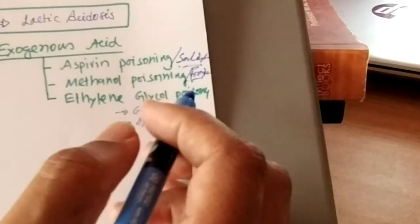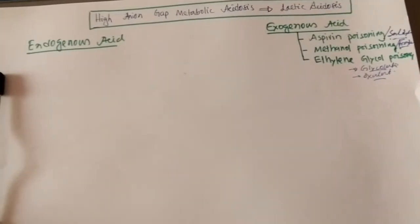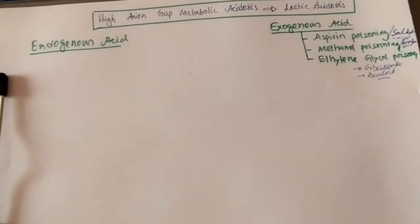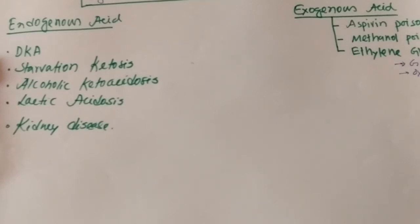Now the endogenous acid load causes: diabetic ketoacidosis, starvation ketosis or ketoacidosis, alcoholic ketoacidosis, lactic acidosis, and kidney disease. Why does a diabetic patient develop ketoacidosis? Some hormonal influences are needed for the synthesis of ketoacidosis.